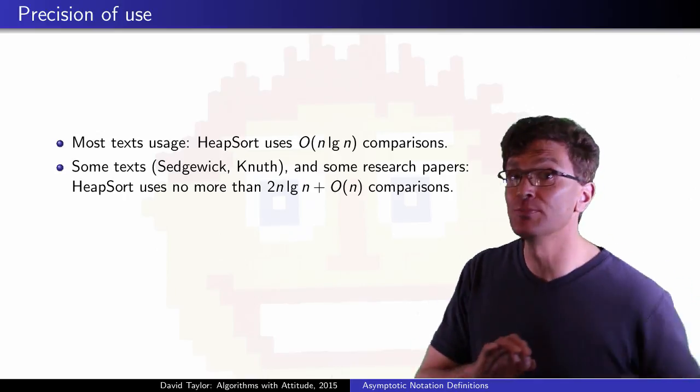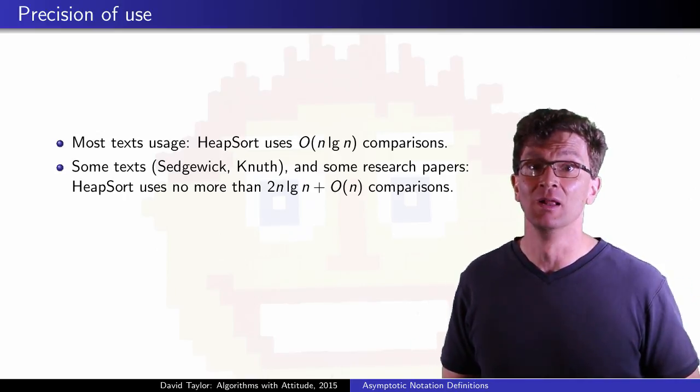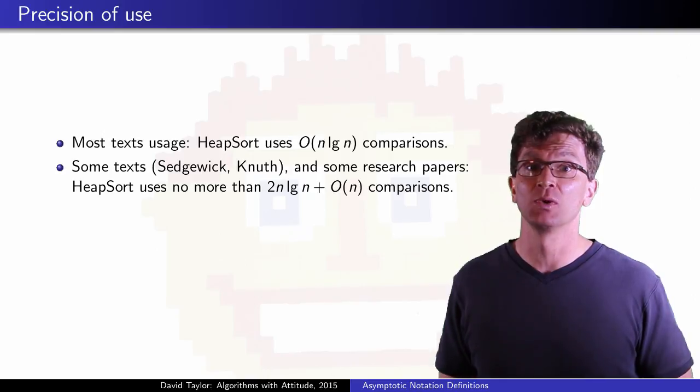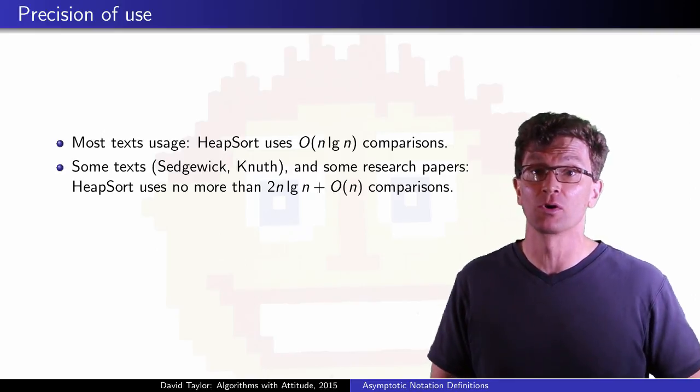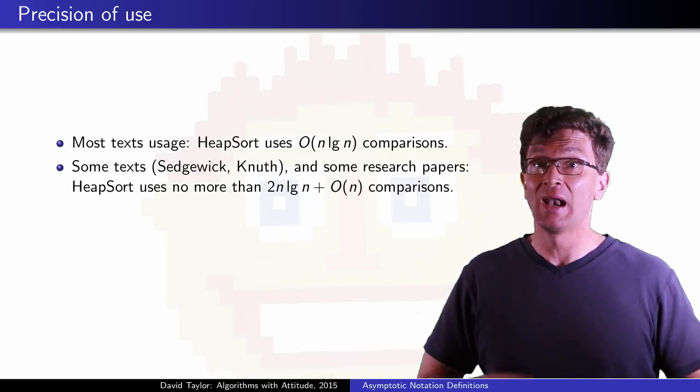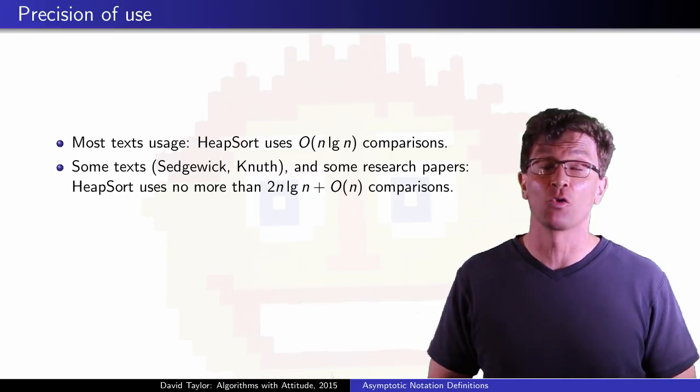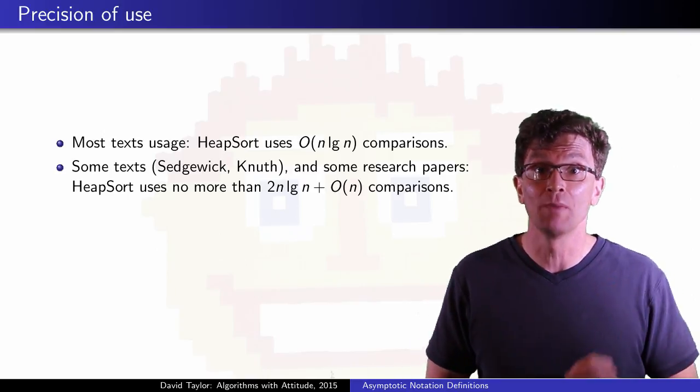Here, only the smaller order terms are brushed into the asymptotic notation. This allows for comparison between different algorithms of the same order growth, like n log n, and helps us in thinking about optimization, because in real life, of course, multiplicative factors do matter.